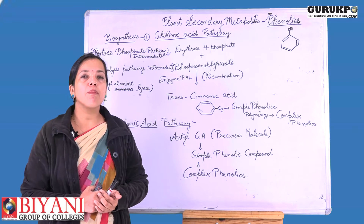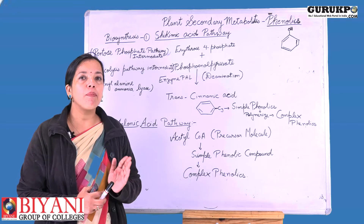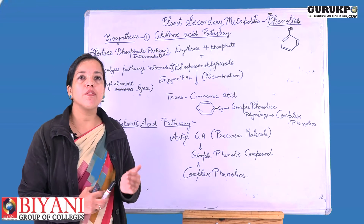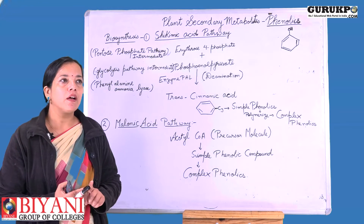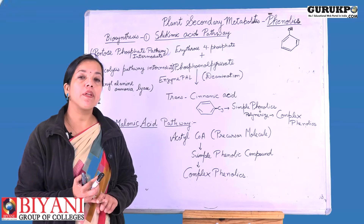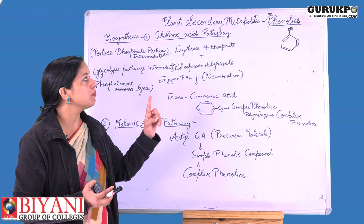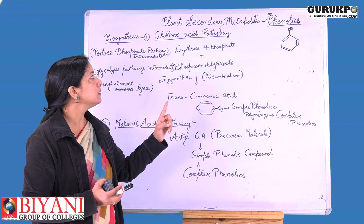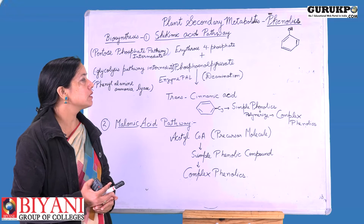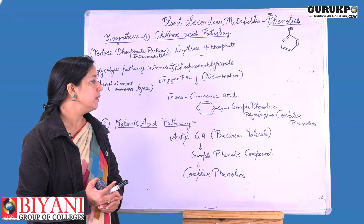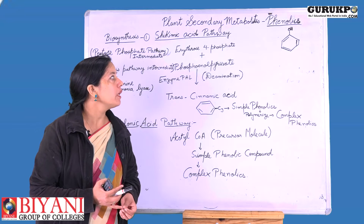In our previous video lecture about plant secondary metabolites, we discussed what they are and how they differ from primary metabolites. We discussed the four types of plant secondary metabolites: terpenes, phenolics, alkaloids, and glycosides. In that lecture, we covered the basic structure, biosynthesis, functions, properties, and uses of terpenes.